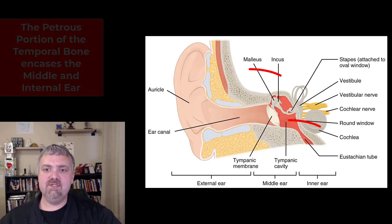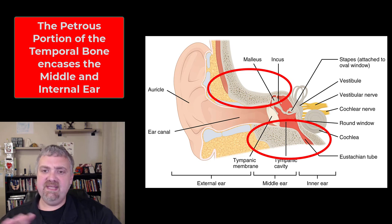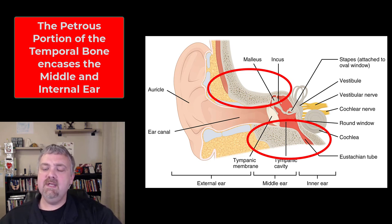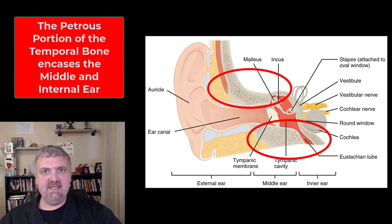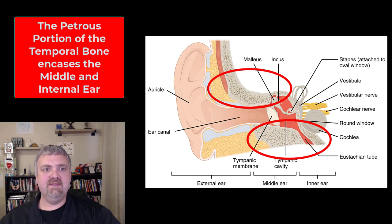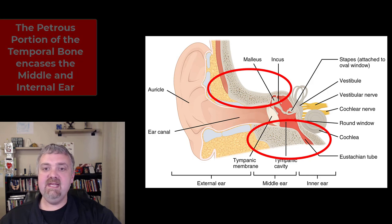That's the lateral view of the skull. I wanted to show you inside the temporal bone. The petrous portion of the temporal bone is where your middle and internal ear structures are encased. It's a very, very hard part of the temporal bone, and one of the functions of the temporal bone is to support the structures involved in hearing.